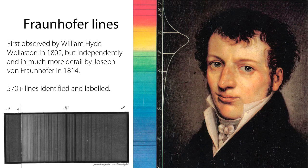But you will have remembered that there were some other details present there. These details were first observed by William Hyde Wollaston in 1802, but Josef von Fraunhofer, working in Germany a few years later, did the first real scientific survey of these dark lines in the sun — these absorption lines, as we now know they are.